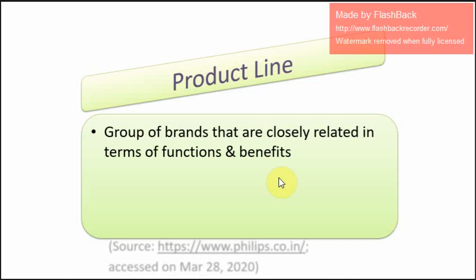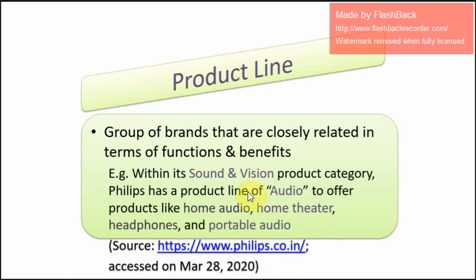Products which are closely related in terms of their functions and benefits to the consumer are called a product line. Within its sound and vision product category, Philips has one product line called audio. Within this audio product line, Philips offers products like home audio, home theater, headphones, and portable audio — four different kinds of products that are similar in functions and benefits.